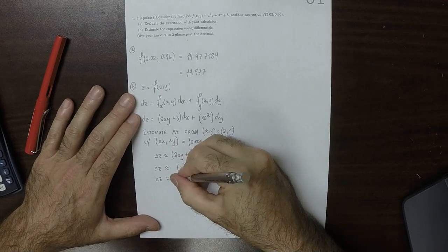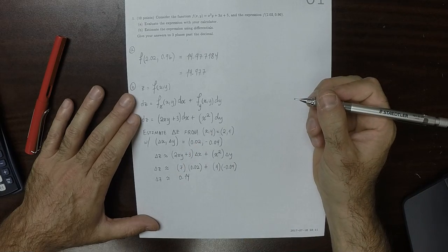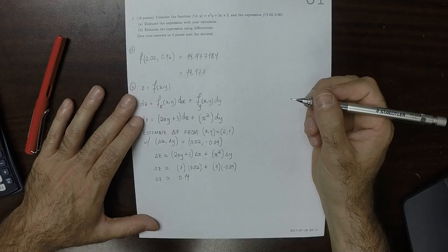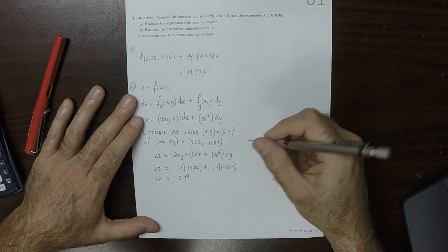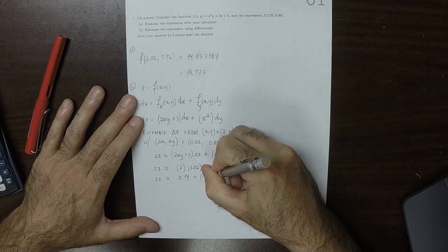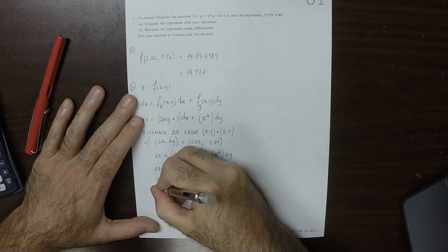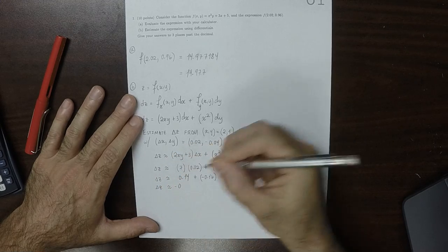So delta z is 0.14, plus negative 0.16, so delta z is approximately negative 0.02.